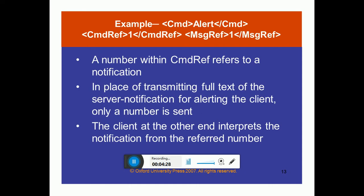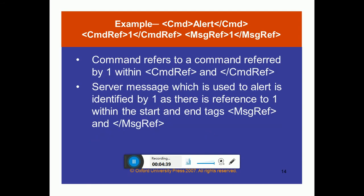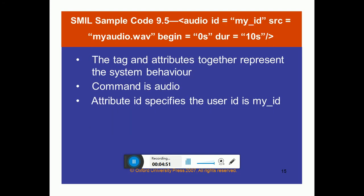A number with CMD reference refers to a notification which the computer gets. In place of transferring the full text of a server notification for alerting the client, only a number is sent. The client at the other end interprets the notification from the number. CMD reference is opened and closed with its respective tags. Message reference is also opened and closed similarly. The tag and attributes together represent the system behavior. The command is an audio attribute; the ID specifies the user ID. Here the command could be any audio — for example, 'your computer might be at risk' — with a source file of my_audio.wav.